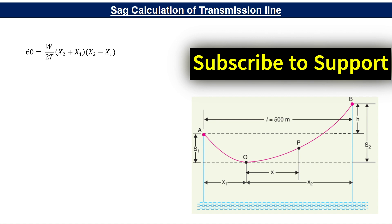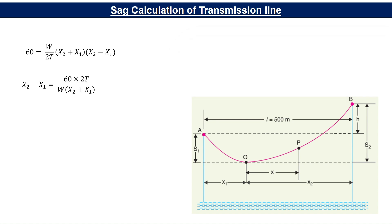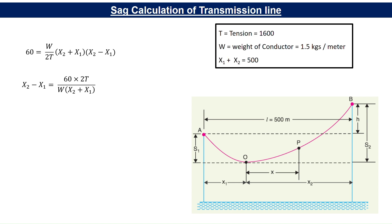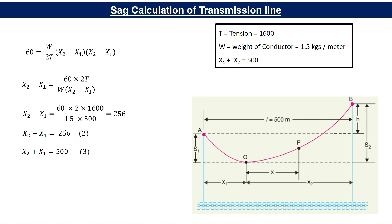Rearranging gives: X2 − X1 = (60 × 2T) / (W × (X2 + X1)). Substituting T = 1600 kg, W = 1.5 kg/m, and X1 + X2 = 500 m: X2 − X1 = (60 × 2 × 1600) / (1.5 × 500) = 256. So X2 − X1 = 256 (equation 2) and X1 + X2 = 500 (equation 3).